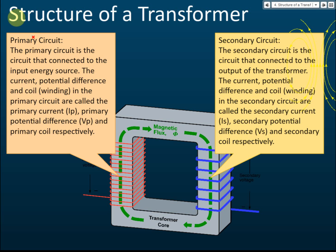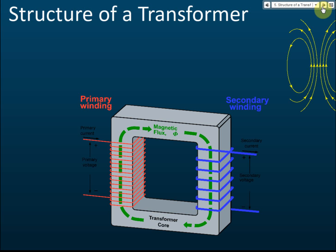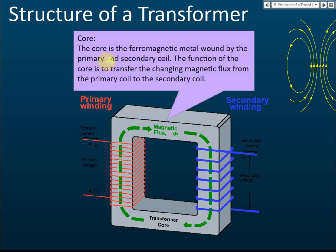The secondary circuit is the circuit connected to the output of the transformer. The current, potential difference, and coil in the secondary circuit are called the secondary current Is, secondary potential difference Vs, and secondary coil respectively. The subscript 's' stands for secondary, and 'p' stands for primary. 'I' is current and 'V' is voltage.